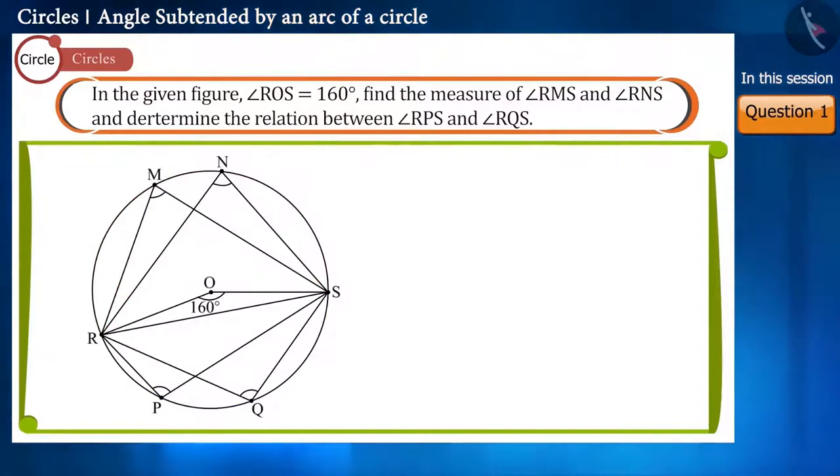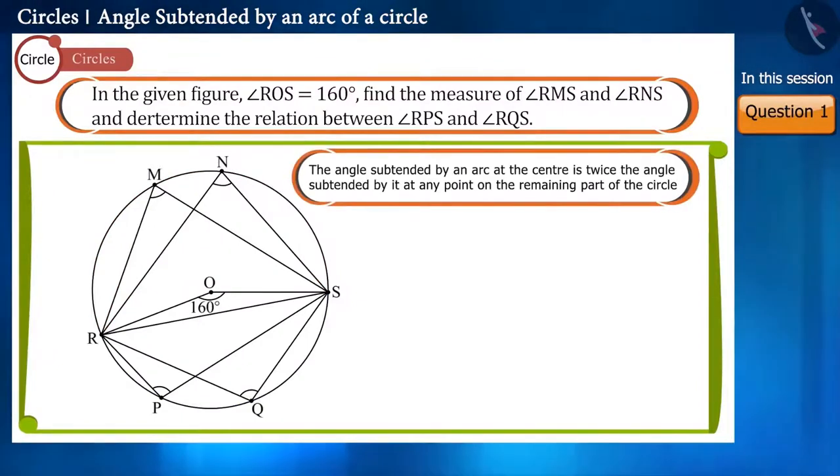Here, we can use the theorem that is, the angle subtended by an arc at the center is twice the angle subtended at any point on the remainder of the circle.